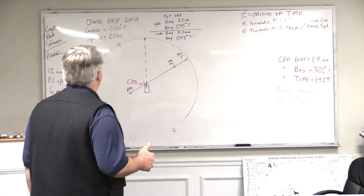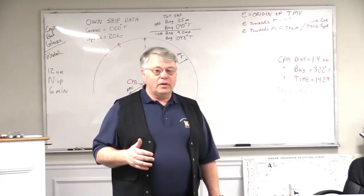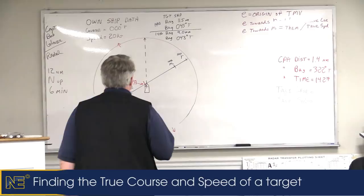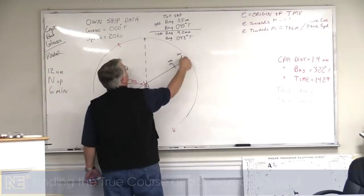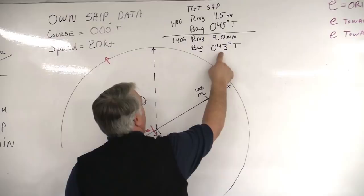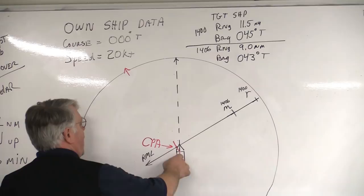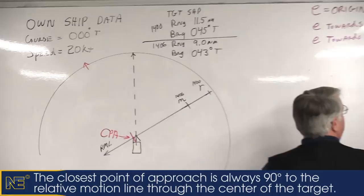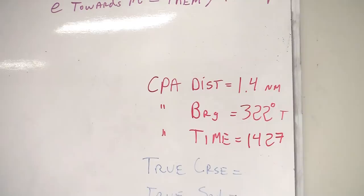We completed Part 1 this morning of figuring out our collision avoidance triangle. Now we're going to do step two and find the true course and true speed of this target ship. As a reminder, our target ship was here at 1400 hours — we call that R — with a range of 11.5 miles at 045. Six minutes later his range was 9 miles at 043. From that we established the relative motion line, the point of CPA, the CPA distance, the CPA bearing, and the CPA time.